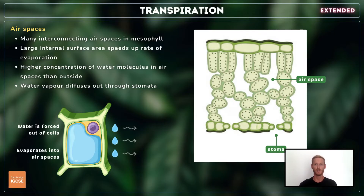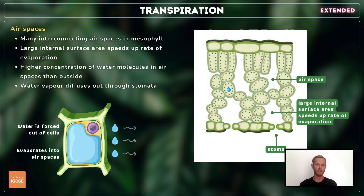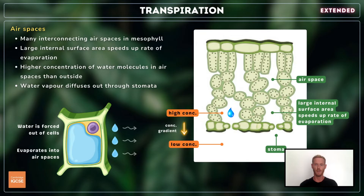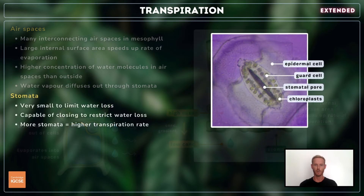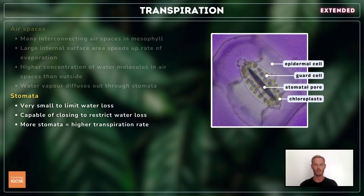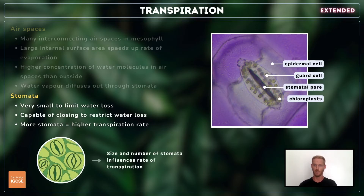For extended, you need to be able to explain the process of transpiration in a little more detail. Mesophyll cells have a vacuole which exerts turgor pressure against the cell wall. This pressure forces some water out of the cells, which evaporates from the outer surface and into the many airspaces of the spongy mesophyll. The mesophyll cells that border the airspaces have a very large collective surface area, so water molecules evaporate freely and the air within the spaces becomes saturated with vapour. This means the concentration of water molecules in the leaf is higher than outside, so water vapour diffuses out of the leaf through the stomata down a concentration gradient. These openings are extremely small and capable of closing to prevent excessive water loss, and their number has a big impact on the rate of transpiration.